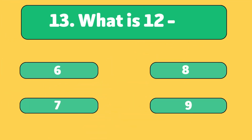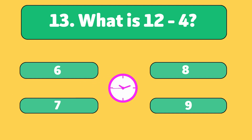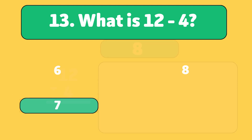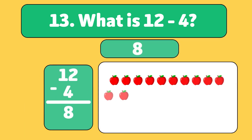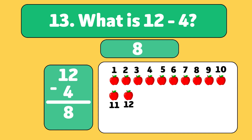What is 12 minus 4? The answer is 8. We start with 12 apples and take away 4. Let's count: 1, 2, 3, 4. We have 8 apples left.